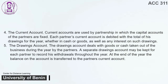The partner's capital accounts are therefore regarded as fixed in such a situation and would only be changed by agreement. 4. The Current Account. Current accounts are used by partnerships in which the capital accounts of the partners are fixed. Each partner's current account is debited with the total of his drawings for the year, whether in cash or goods, as well as any interest on such drawings. 5. The Drawings Account. The drawings account deals with goods or cash taken out of the business during the year by the partners. A separate drawings account may be kept for each partner to record his withdrawals throughout the year. At the end of the year, the balance on the account is transferred to the partner's current account.